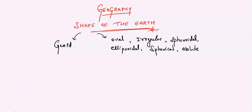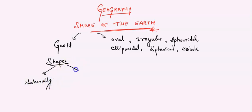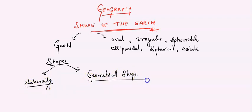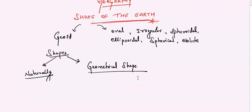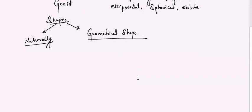Now I will tell you about the actual shape of the earth. We can define the shape of the earth in two ways: one is naturally occurring shape, and the other one is geometrical shape. Is this clear? Good.